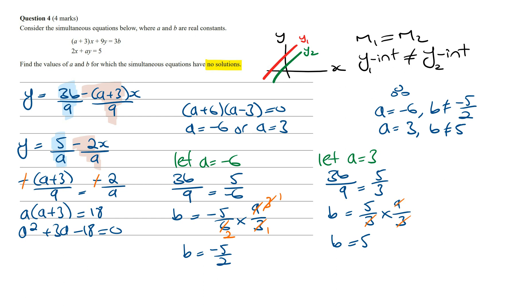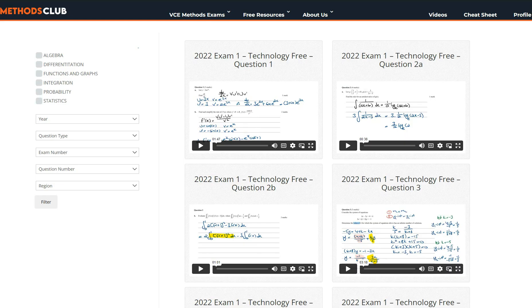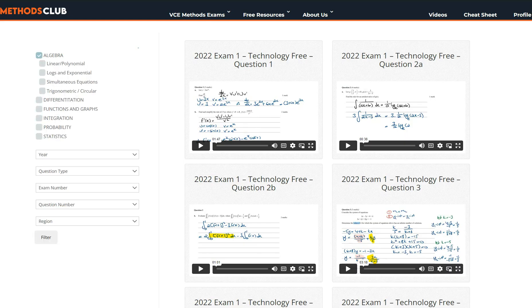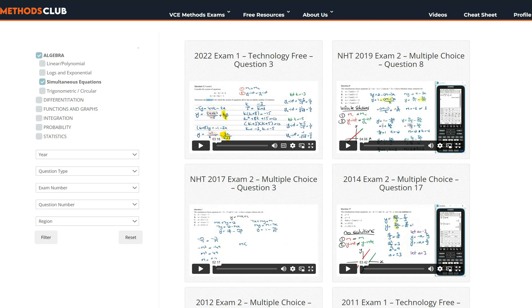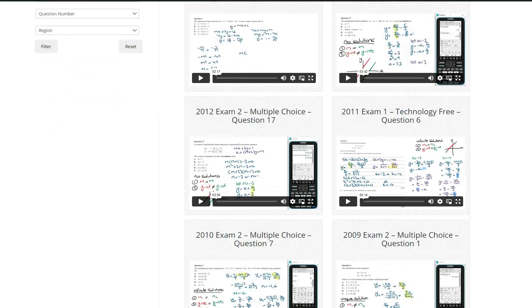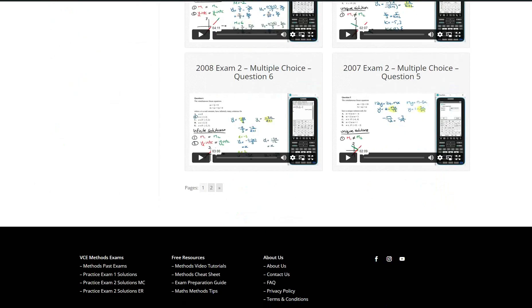And that's it for this question. Now if you guys want to practice and learn exam-style questions, similar to this one, then join the Maths Methods Club where you can group past Maths Methods exam questions by topic. For simultaneous equations, just click on Algebra from the main topics, and then simultaneous equations from the subtopics, and then click on Filter. This is then going to instantly group all the past Maths Methods exam questions where it's asking you about simultaneous equations.